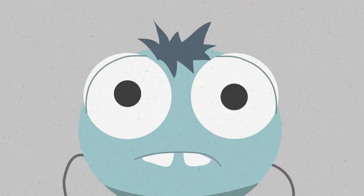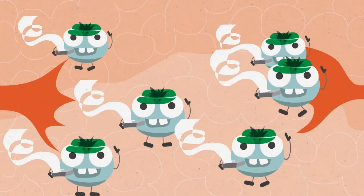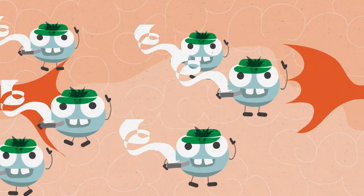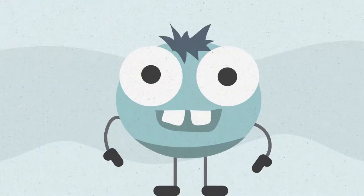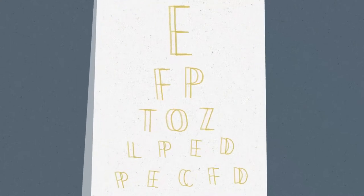What Bobby doesn't realize is that all of his problems come from his vision. His eyes don't work together as a team, which causes confusion in his brain. And Bobby isn't alone. One in twelve people have a vision dysfunction just like Bobby, that are often missed in a standard vision screening.